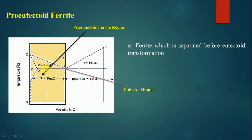This continues up to 0.2 percent. When it is achieved, the amount of alpha and austenite at any temperature in between can be found out by applying the lever rule. Using the lever arm, we calculate the opposite arm divided by the total length of the arm to find the amount of each phase.